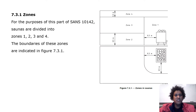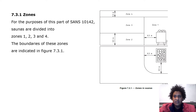The zones: for the purpose of this part of SANS 10142, saunas are divided into zones 1, 2, 3, and 4. The boundaries of these zones are indicated in figure 7.3.1. Zone 1 is by the coals and extends 0.5 meters from the heating coals. Zone 2 is next to zone 1 and extends 0.5 meters from the floor. Zone 4 is 0.3 meters from the roof, and in between we find zone 3.